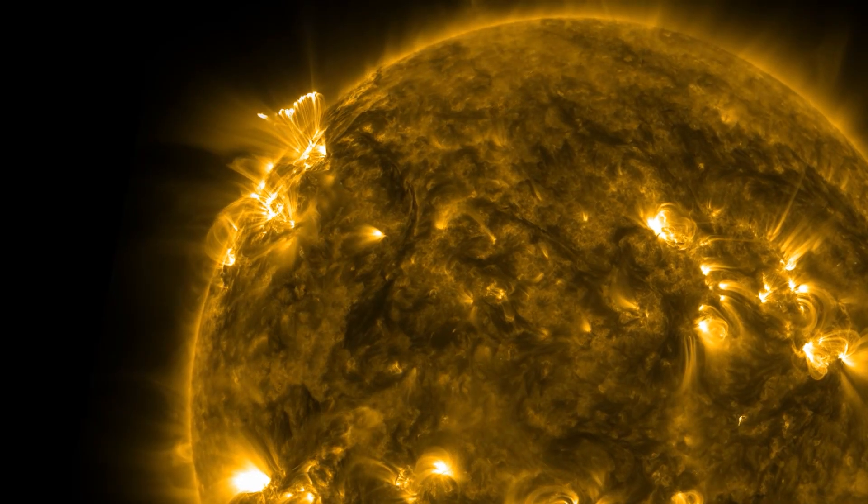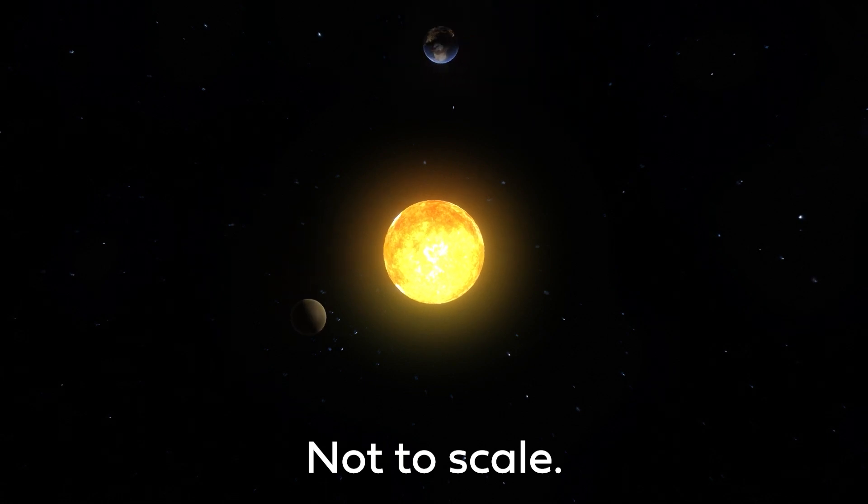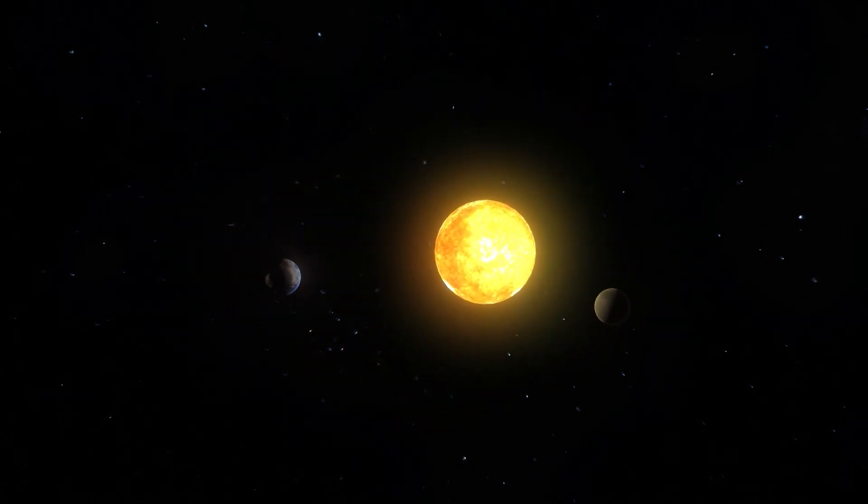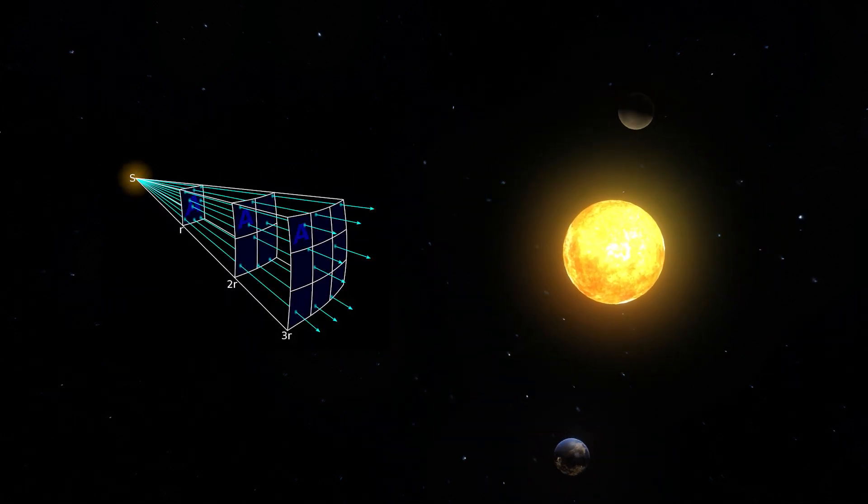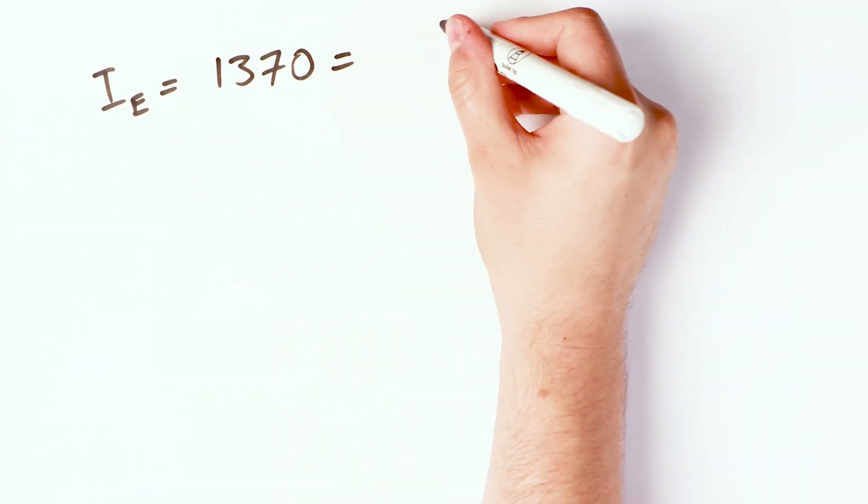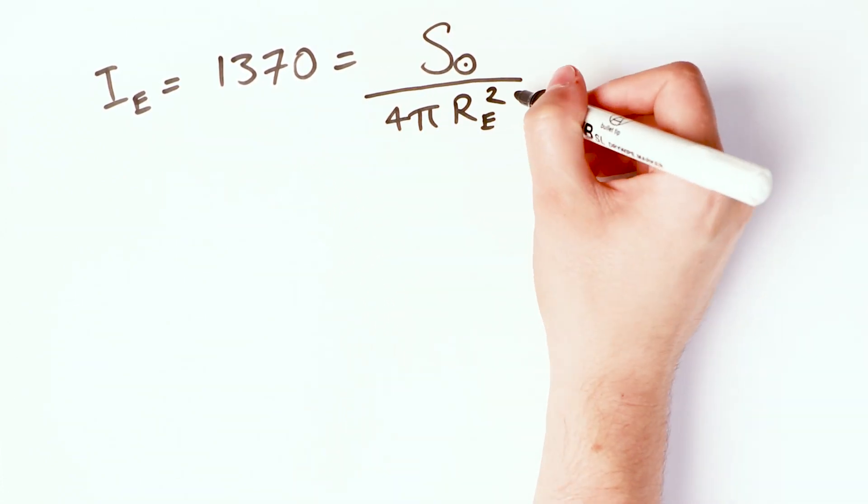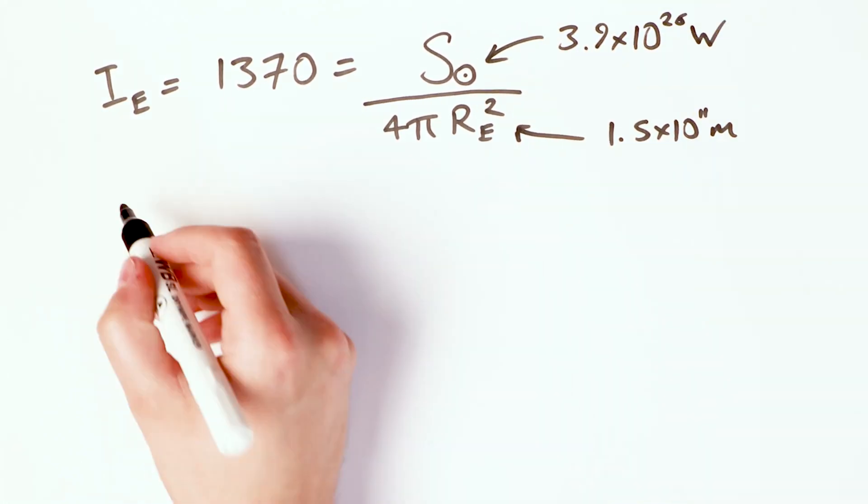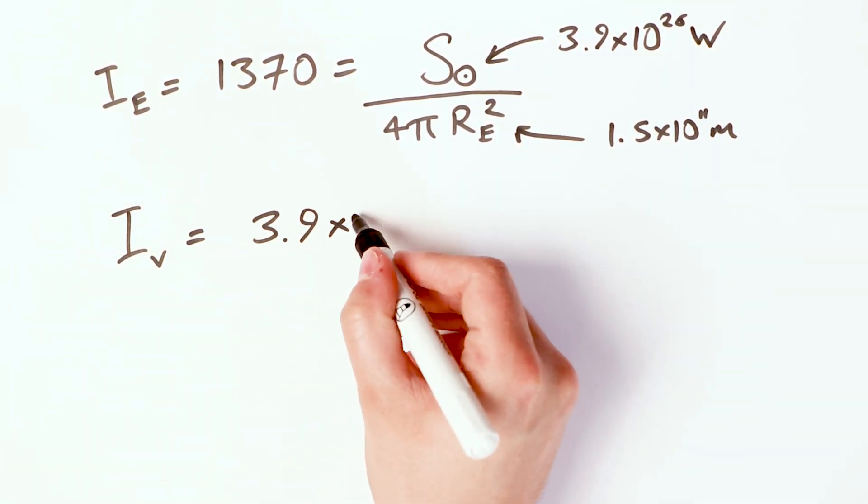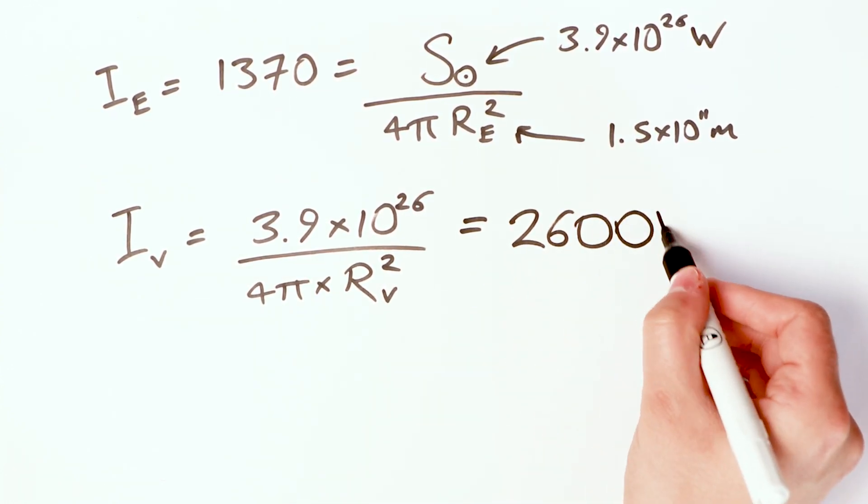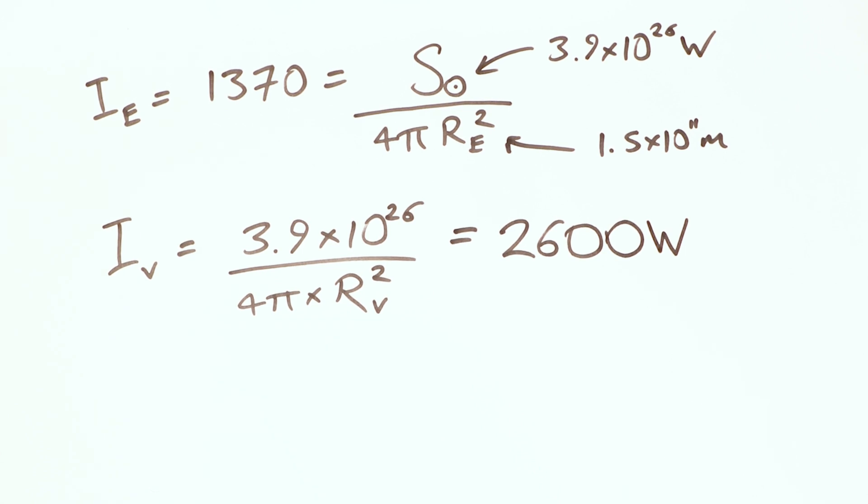Venus orbits the Sun at just less than three quarters the distance that the Earth orbits. The amount of solar energy received at a given distance from the Sun is given by an inverse square law. As you get close to the Sun, you receive much more energy. Because we can measure how much solar energy we receive here on Earth, about 1,370 watts per square meter, we can work out the total energy output of the Sun, and thus the amount of energy that Venus receives per square meter. This turns out to be almost twice as much as the Earth receives, about 2,600 watts per square meter.